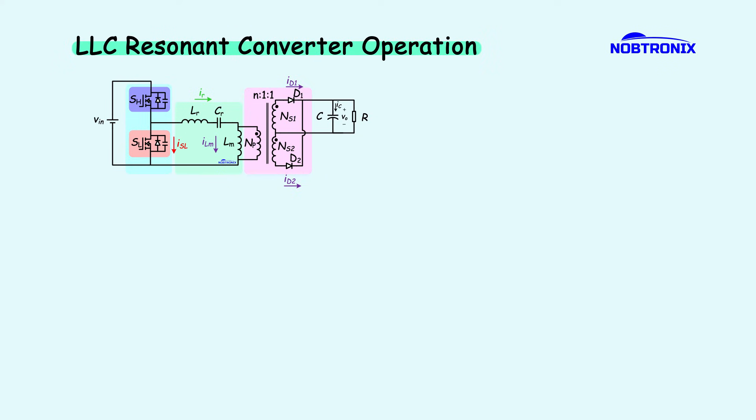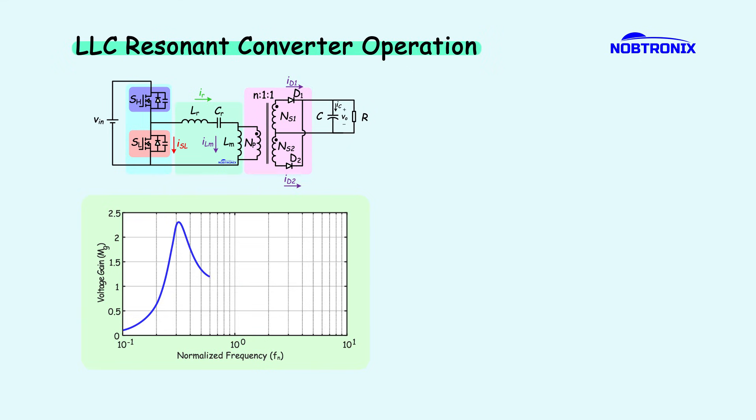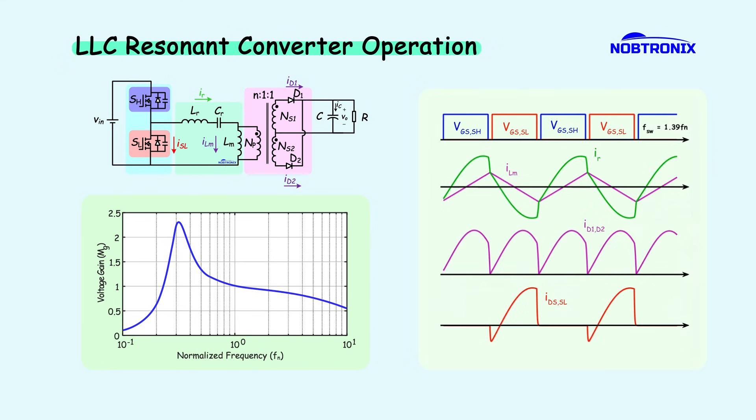Here, you can see the converter circuit along with the voltage gain curve plotted for a specific set of parameters. The waveforms of the switching signals are shown, as well as the resonant current and the magnetizing inductor current. Also, the diode current and the low side switching current are shown. These waveforms correspond to an operation point above the resonant frequency, which is marked on the gain curve.